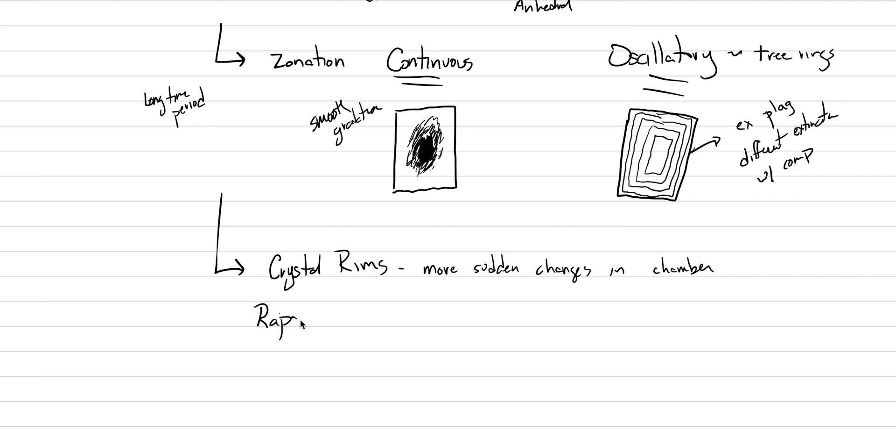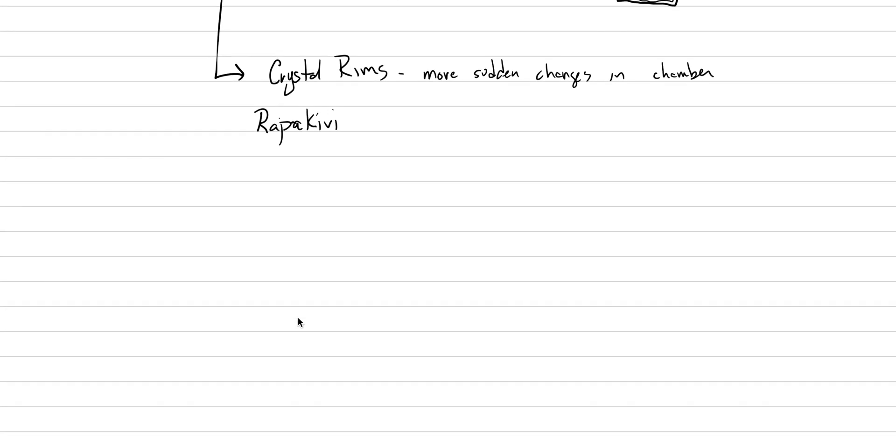One of the more famous types involves plagioclase, and it's called rapikivi texture. This is a fun one to say. I want you to know rapikivi. You might be able to show your family members at Thanksgiving rapikivi texture because it's in granites, and granites are countertops. So this is a neat one to learn. You can tell a story of petrology. With rapikivi texture, it is plagioclase rims on K-spar. That's as simple as I can describe it.